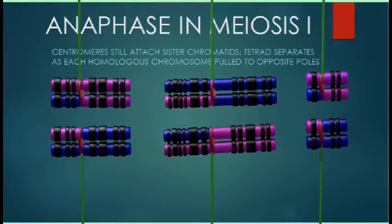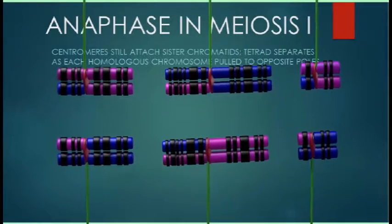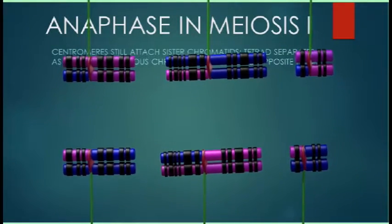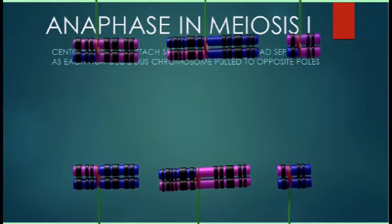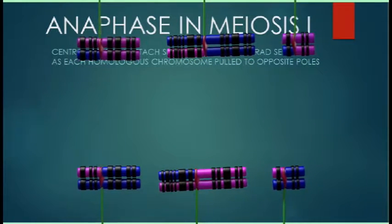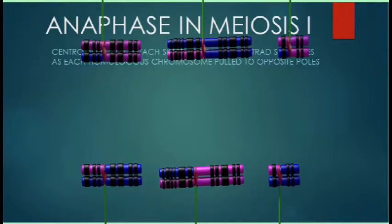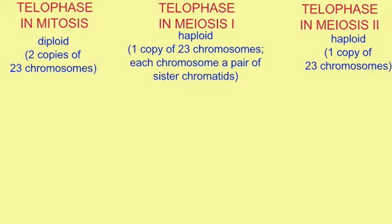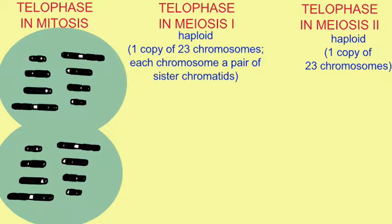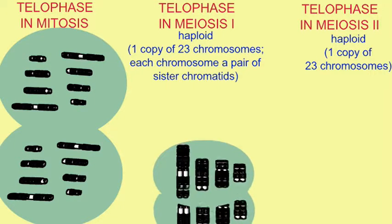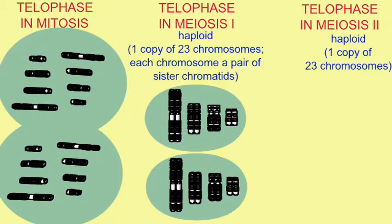In telophase of meiosis I, two daughter cells form, which possess 23 chromosomes in their nuclei, although each chromosome consists of a pair of sister chromatids still joined at the centromere.